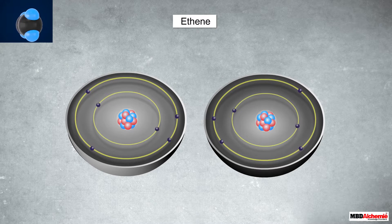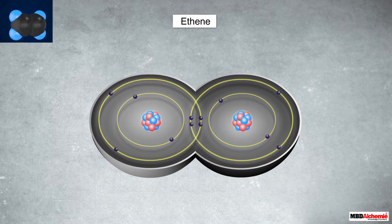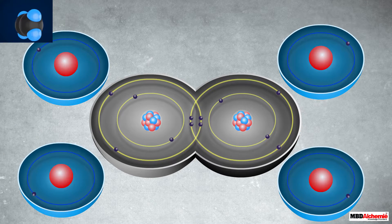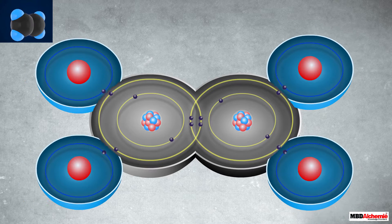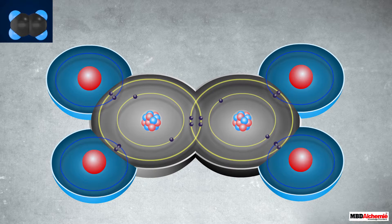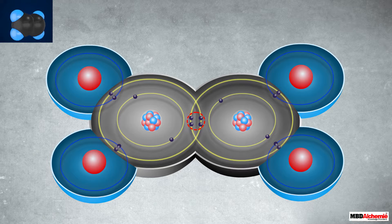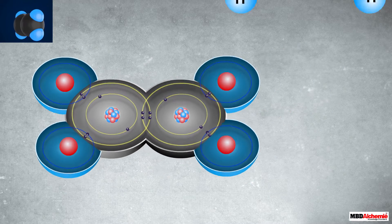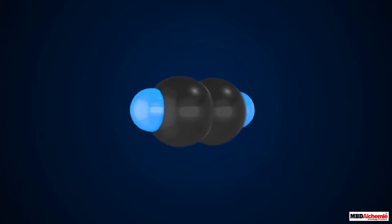Let's now move to the molecule of ethene. In this case the two carbon atoms share two pairs of electrons with each other. This leaves each carbon atom with two unsatisfied valences, which are satisfied by sharing one pair of electrons with two hydrogen atoms. This way in an ethene molecule there is a double covalent bond between the two carbon atoms, and each carbon atom also forms a single covalent bond with two hydrogen atoms.